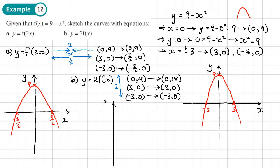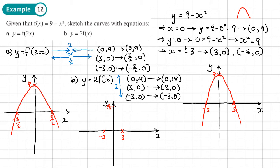Drawing the sketch for part B: marking the y-axis with 18 at the top, and x-intercepts at 3 and −3. The graph goes through those points and reaches twice the height. What's really important is getting the shape right and the coordinates right — that will earn full marks. It doesn't need to be perfect, but the shape and coordinates must be correct.